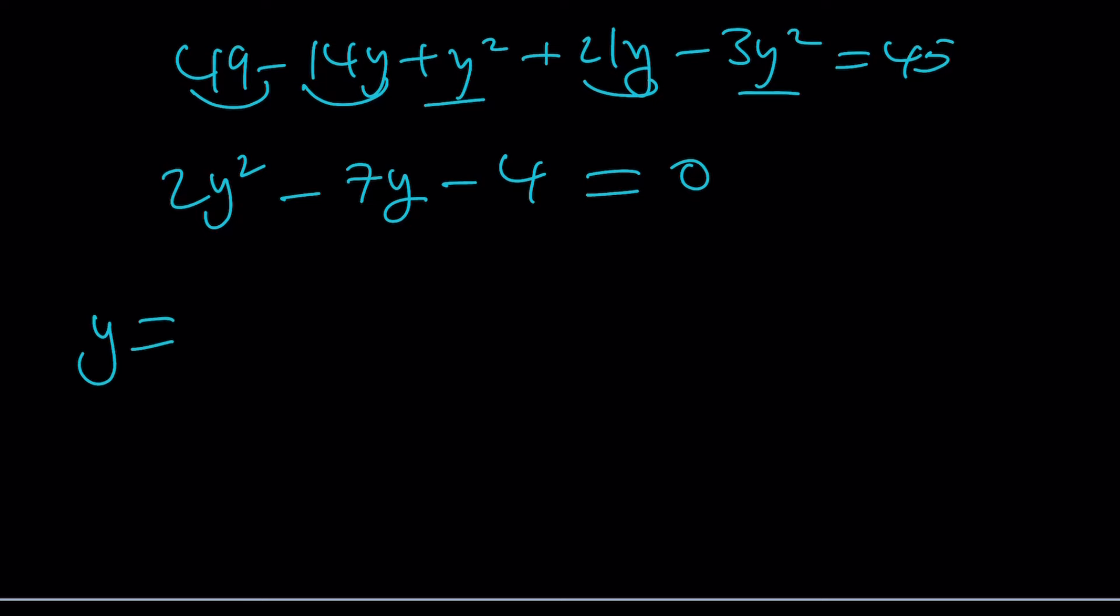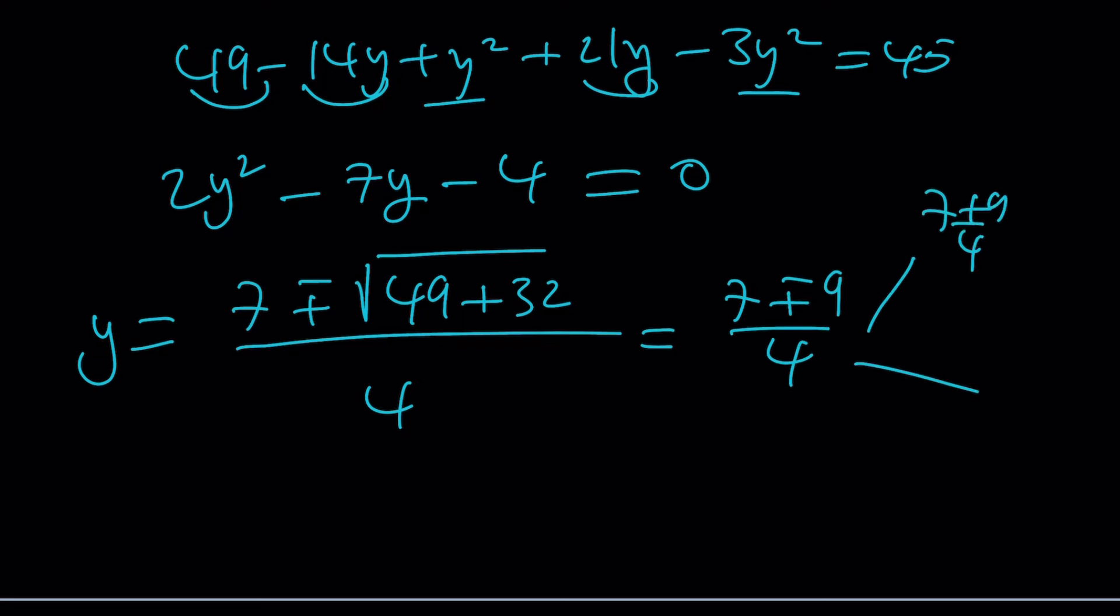And then from here, using the quadratic formula, you're going to get something like negative b plus minus the square root of b squared minus 4ac. It's going to be 49 plus 32. And guess what? That equals 81. So, square root it. You're going to get 9. And split it up. You're going to get 7 plus 9 over 4 and 7 minus 9 over 4. 7 plus 9 over 4 is equal to 4. And it's equal to negative 1 half. These are the y values.